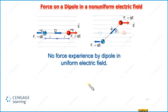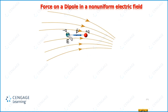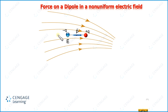Now let us place the dipole in a non-uniform electric field. At the position of the negative charge, the density of electric field lines is less, and at the position of the positive charge, the density is greater. That means the electric field intensity at the positive charge is greater than at the negative charge. So the force on the positive charge in the rightward direction is greater than the force on the negative charge in the leftward direction. Therefore, in this condition, the dipole will experience a net force.